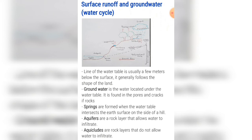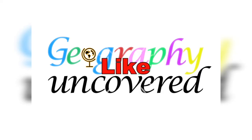Groundwater is the water located under the water table. It is found in the pores and cracks of rocks. Springs are formed when the water table intersects the earth's surface on the side of a hill. Aquifers are rock layers that allow water to infiltrate, while aquicludes are rock layers that do not allow water to infiltrate.